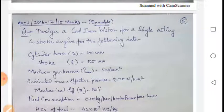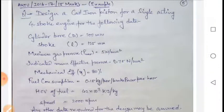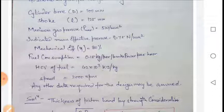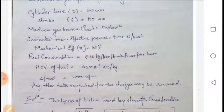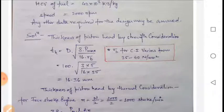Now I will discuss one important question — a 2016-17 50-mark question from the AKTU examination. Design a cast iron piston for a single-acting four-stroke engine with the following data: bore D is given, stroke is given, maximum gas pressure Pmax = 5 N/mm², indicated mean effective pressure PM is given, mechanical efficiency is given, fuel consumption is 0.15 kg/kWh, HCV of fuel is given, and engine speed is given. Any other data required for design may be assumed.